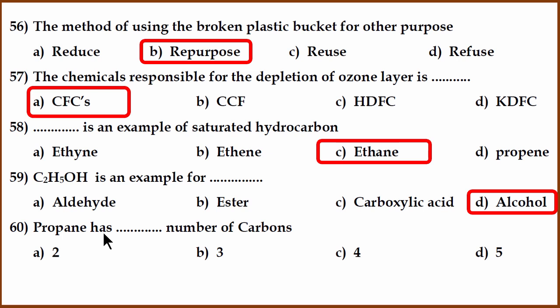60th question. It's a poorly written question. Propane has how many number of carbon atoms? It has three carbon atoms. Propane has three carbon atoms. Methane has one. Ethane has two. Propane has three and butane has four.